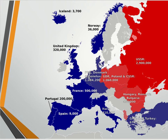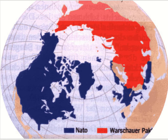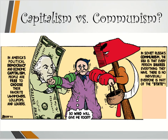Here's a polar view showing where all the blue — capitalistic NATO — countries are, and then the Warsaw Pact countries. NATO, the North Atlantic Treaty Organization, includes all of these countries in the North Atlantic. Here's a quick cartoon to help us figure out the difference between capitalism and communism. We have a woman from Eastern Europe who is only concerned about food — the area fighting over whether it should be capitalist or communist. The Americans are saying that in America's political democracy and economic capitalism, people are free to choose their favorite lawnmowers, lollipops, and leaders. In Soviet Russia's communism, the idea is that every person shares everything — there's no individual, everyone's part of the state. She doesn't really care which side is in charge; she's more concerned about having access to food.